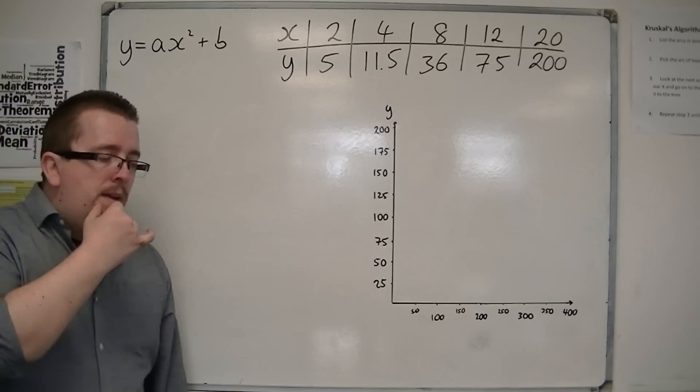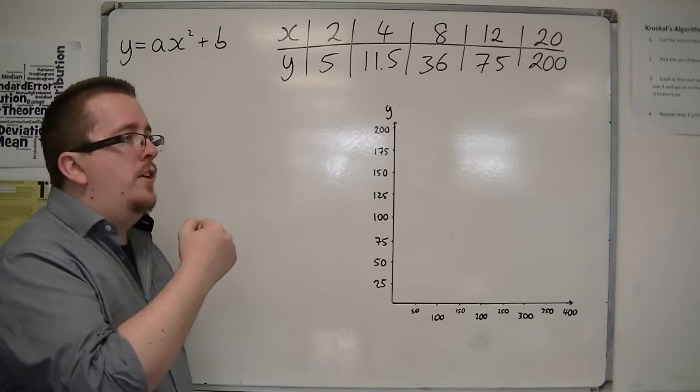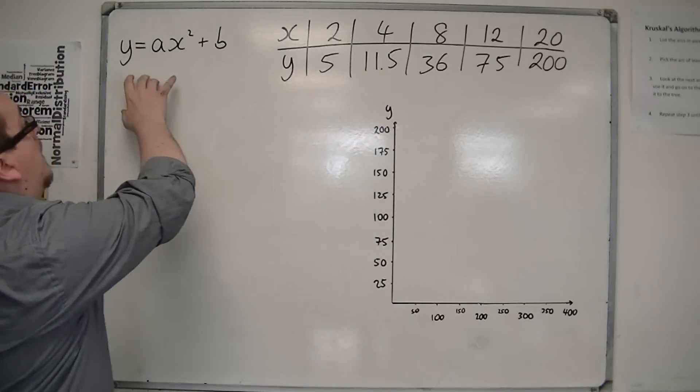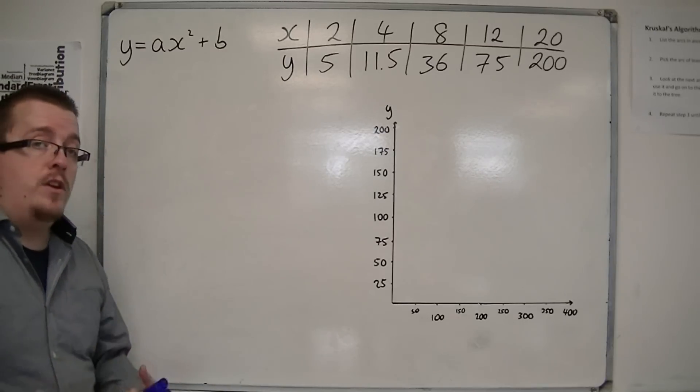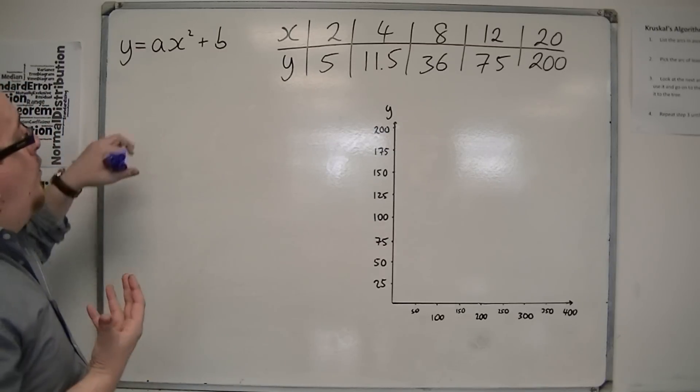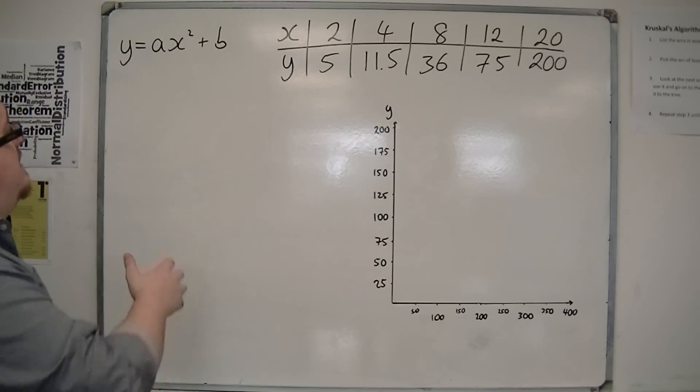And we have this idea that this should fit y equals ax squared plus b. Now we don't know the value of a, we don't know the value of b, but we assume that it's going to fit this model.